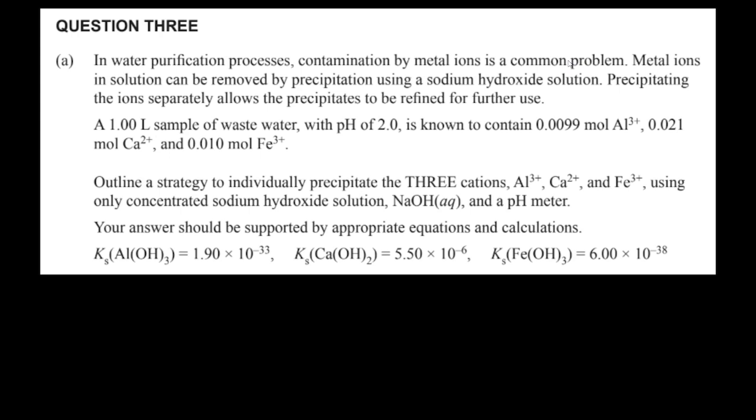In this question, we have a contaminated water solution. It's contaminated with a few different metal ions. Metal ions in solution can be removed by precipitating them out. So right now they're dissolved, they're in aqueous form, but if we add something to it maybe we can turn it into a solid that precipitates so it's non-soluble and we can remove it from the solution.